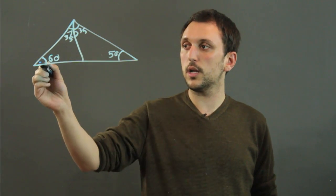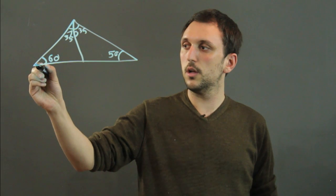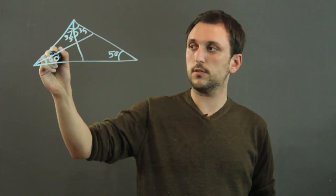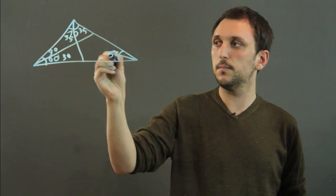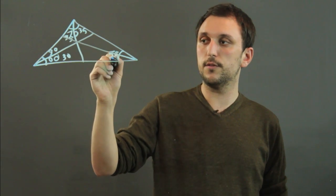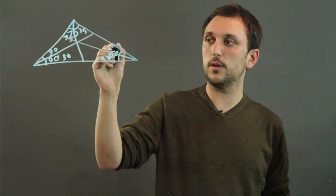And over here, if we wanted an angle bisector, we would split the 60 into 30 and 30. With the 50, we would have it becoming 25 and 25.